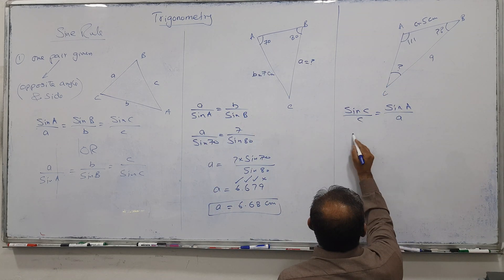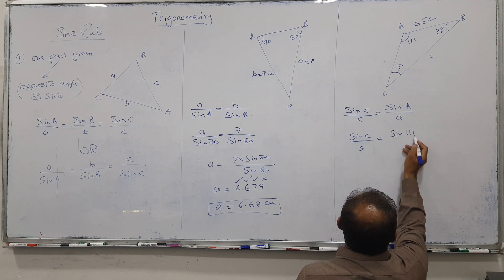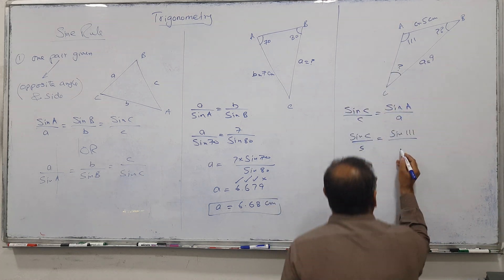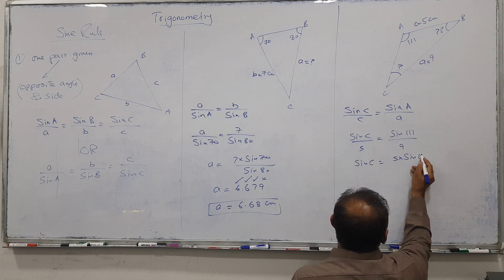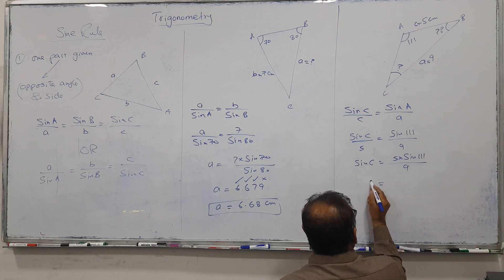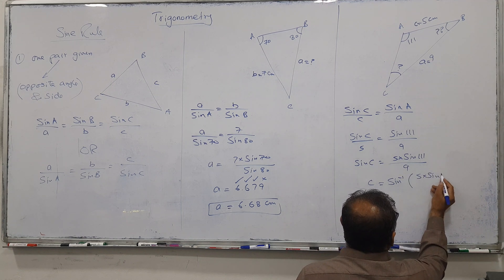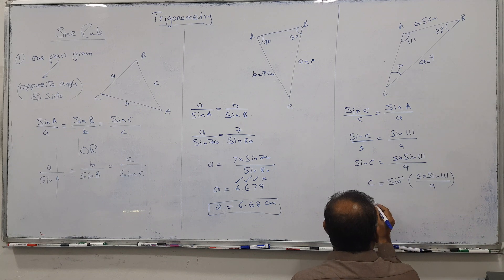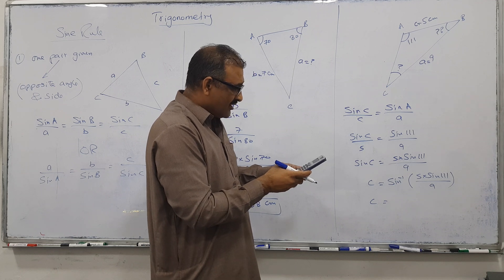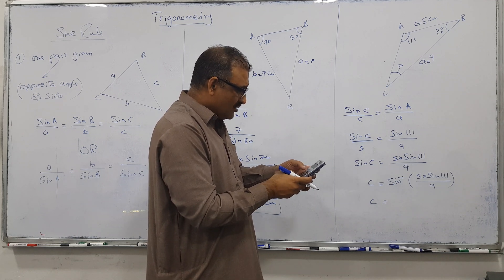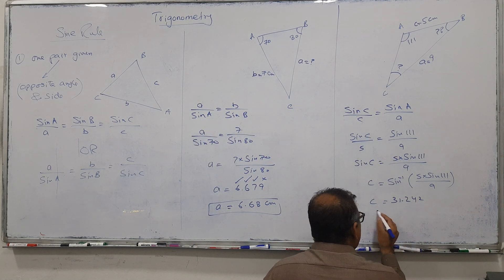Using sin C over small c equals sin A over small a: small c is 5, capital A is 111°, and small a is 9. So sin C equals 5 times sin 111°, divided by 9. To find angle C, take sine inverse of the whole expression: sine inverse of (5 times sin 111 divided by 9). The answer comes to 31.242°, which is 31.2° to one decimal place.